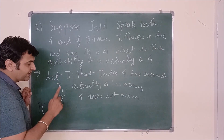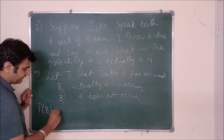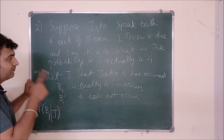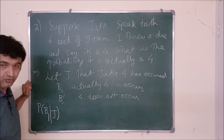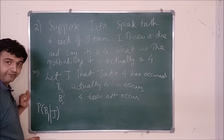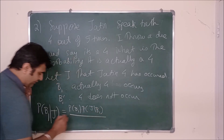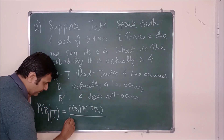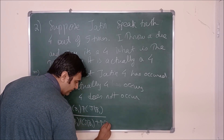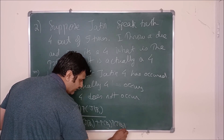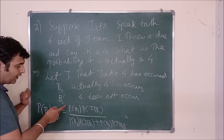Either 4 will occur or it will not, so this covers our complete sample space. We want to find P(B1|J) — the probability that 4 actually occurred given that Jatin says it did. By Bayes' theorem: P(B1|J) = P(B1)·P(J|B1) / [P(B1)·P(J|B1) + P(B2)·P(J|B2)]. P(J|B1) means the probability Jatin says 4 given 4 actually occurred, which is his truth-speaking probability.